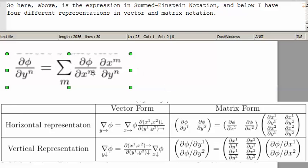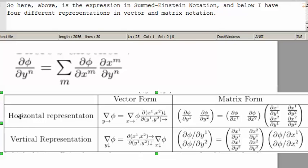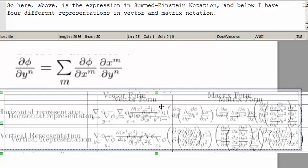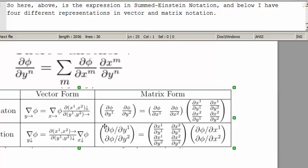So here, above is the expression in the summed Einstein notation. And below, I have four different representations in vector and matrix notation. I'm just going to move it over. You can see this is the horizontal representation and the vertical representation. In the horizontal representation, the vector is represented as a horizontal matrix. And in the vertical representation, the vector is represented as a vertical matrix. But you can see these two things are just transposes of each other.